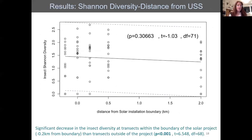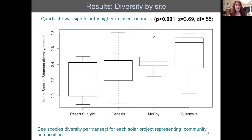Similarly, Shannon diversity also shows a jump right at the zero-meter boundary line — you see a lower value inside and then a jump at the boundary. When we include the Quartzite site, which is completely undisturbed and proposed for a new solar facility, there is visible variability but a significant difference in insect richness at that completely undisturbed site compared to the active solar sites.